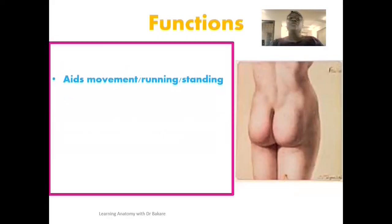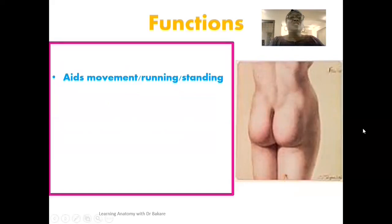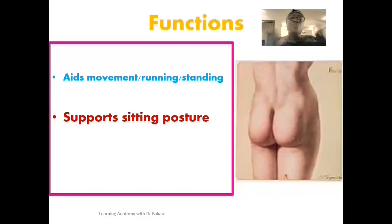The gluteal region aids movements, running, and standing postures. It is structurally made up of a number of structures, with muscles forming the greater proportion of its components. These muscles are inserted into the upper region of the lower limb and thus aid movement, running, and sitting posture by controlling these actions through their point of insertions. During sitting, the impact is created more on the gluteal region, so it helps support the sitting posture.